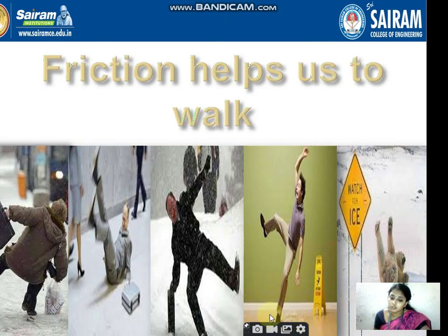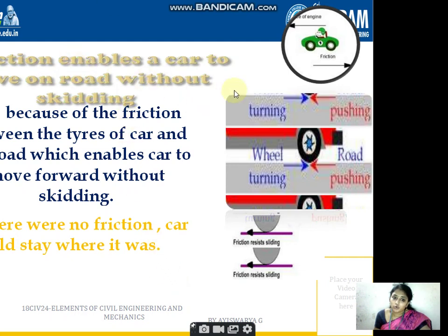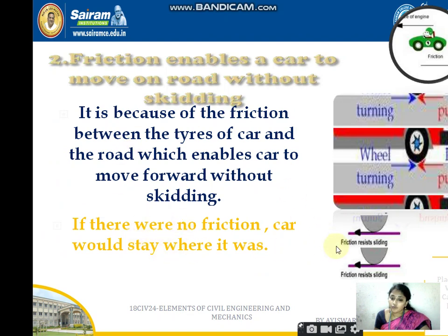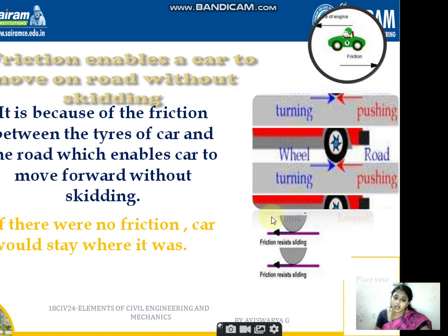If the floor is under maintenance, cleaned with oil or water, a man walking on it cannot balance his own weight and falls — the same happens on an icy floor. Friction enables a car to move on a road without skidding. Because of the friction between the tires and the road, the vehicle can move forward without skidding. If there were no friction, a car would stay where it is. There are two types of friction: rolling friction and sliding friction.